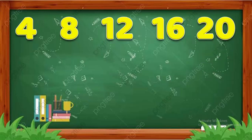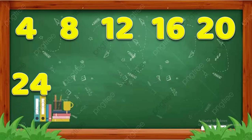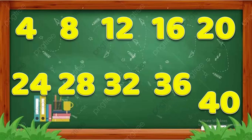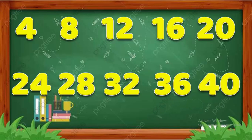4 fives are 20. 4 sixes are 24. 4 sevens are 28. 4 eights are 32. 4 nines are 36. 4 tens are 40.